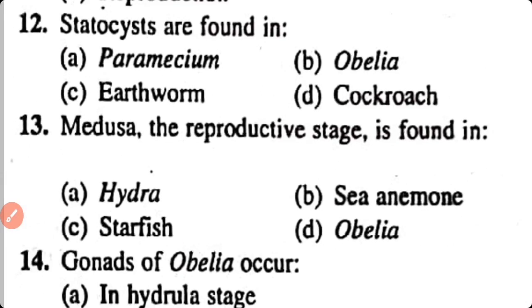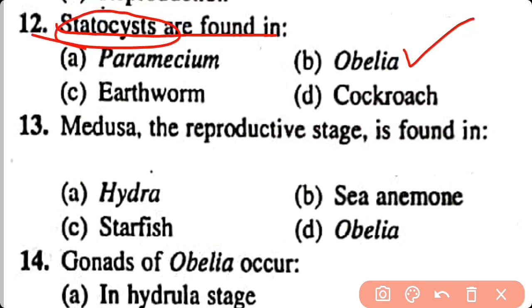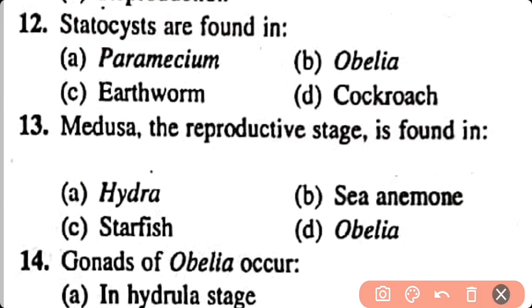Question number 12. Statocysts are found in: Paramecium, Obelia, Earthworm, Cockroach. Correct answer is option B. Statocysts are the organs of balance. They are present in Obelia.